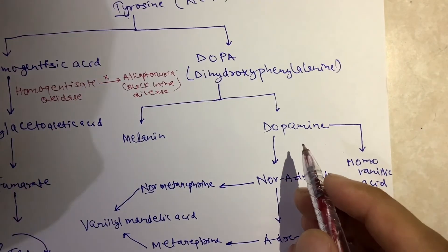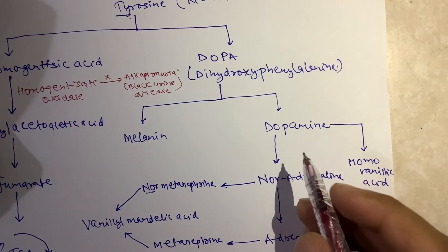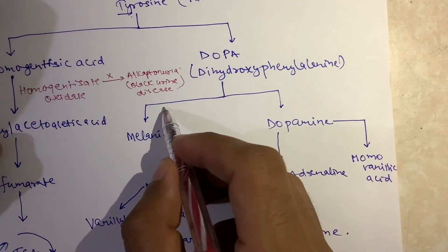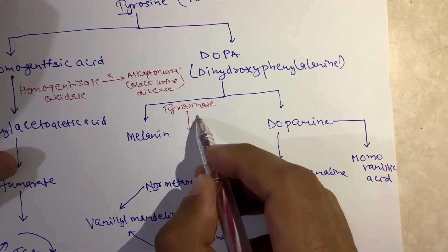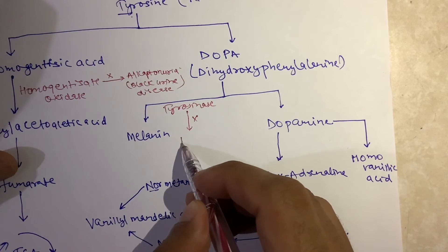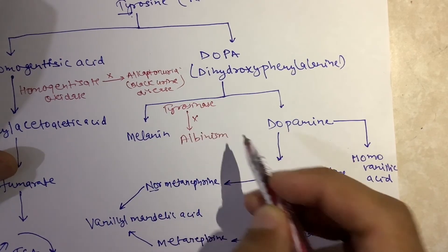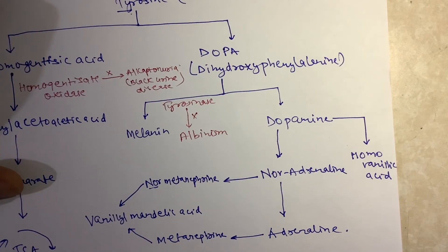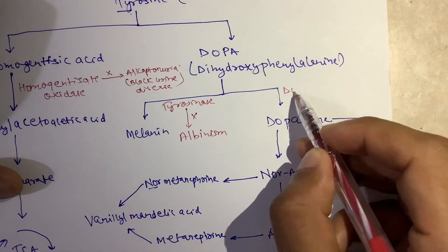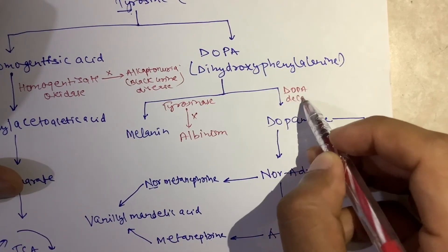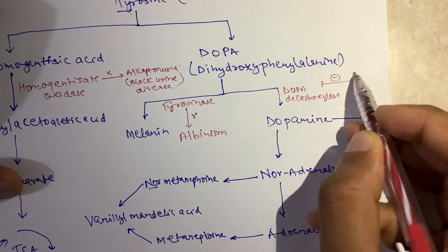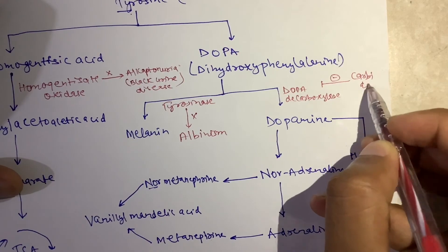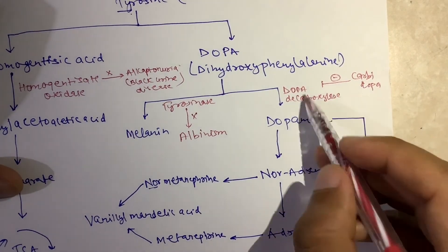The next relevant enzyme is tyrosinase — deficiency of tyrosinase results in albinism. The next enzyme is DOPA decarboxylase, and carbidopa is a drug used in Parkinson's disease that inhibits this enzyme.